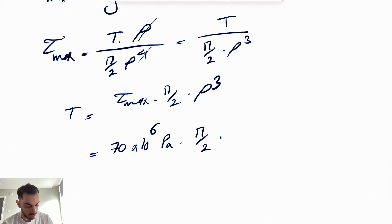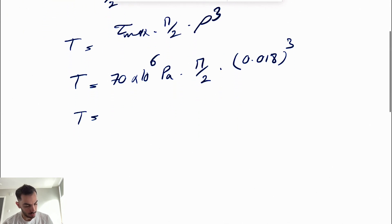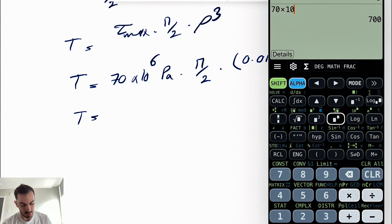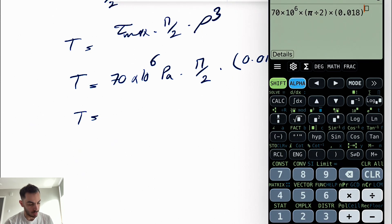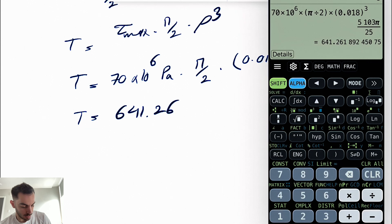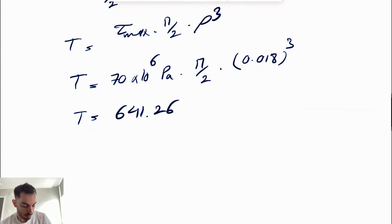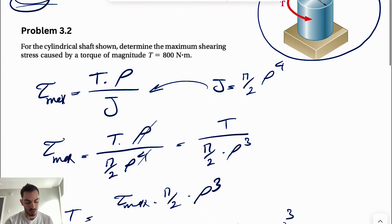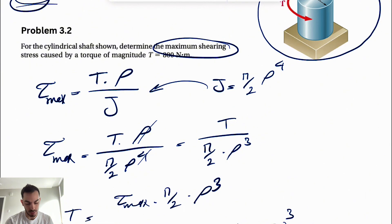Times π/2 times the radius, which is 18 millimeters or 0.018 meters after unit conversion, to the power of three. Let's calculate this: 70 × 10⁶ × π/2 × (0.018)³ gives us 641.26 newton meters. That's the answer for question 3.1.